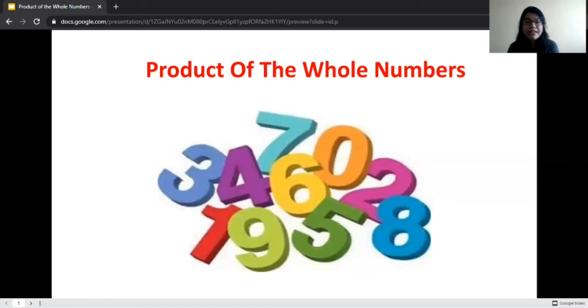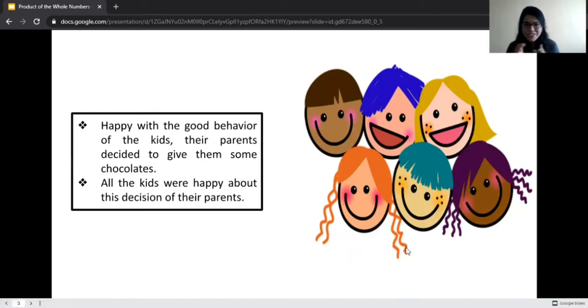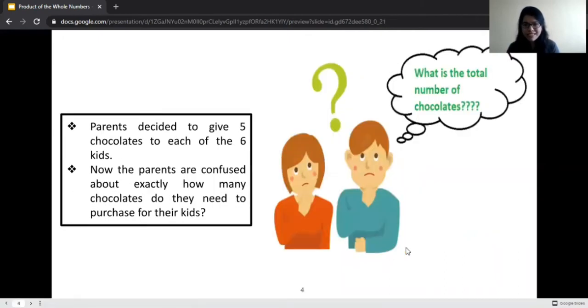That was all about me. Let us start with our topic. The topic is product of the whole number. Now let me tell you a story of a family. In a family there were six kids, two brothers and four sisters. All the kids were very well-mannered, very obedient, really good behaved. Naturally the parents were very happy with the behavior of the kids. To encourage this good behavior, parents decided to give them some chocolates. Listening to this, obviously all the kids were very happy.